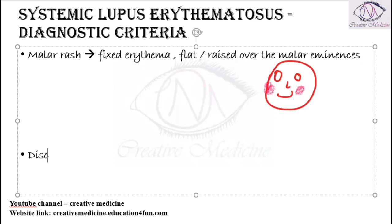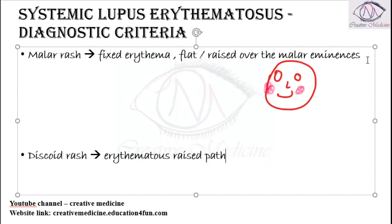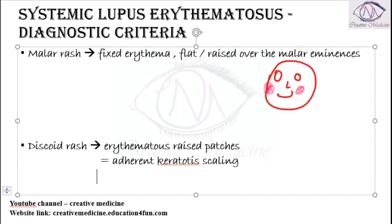The second criterion is discoid rash. Discoid rash consists of erythematous raised patches which are adherent, have adherent keratotic scaling, and follicular plugging can also be present. This discoid rash is also a diagnostic criterion for systemic lupus erythematosus.